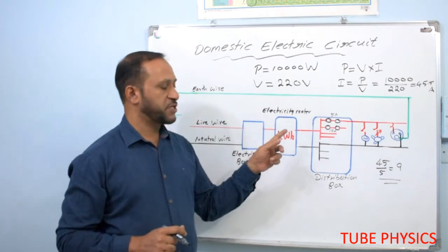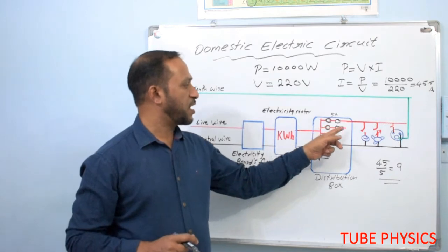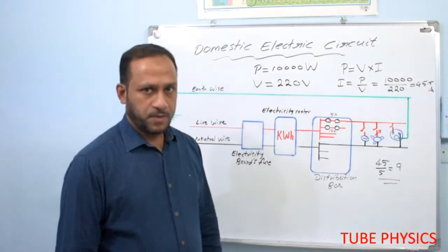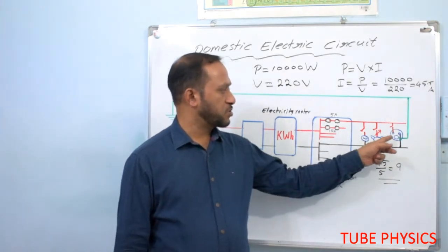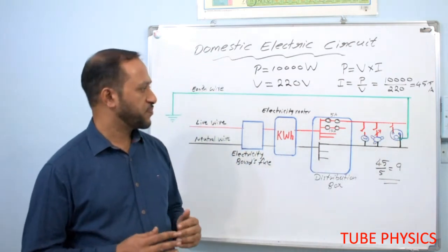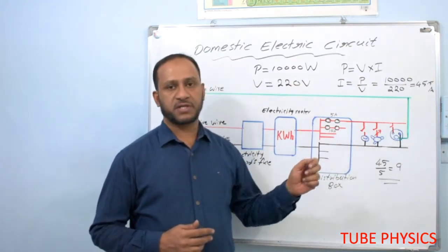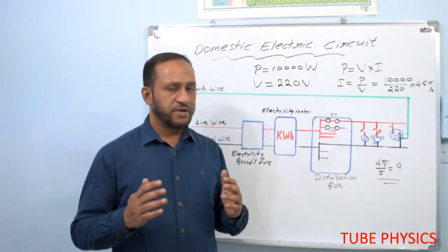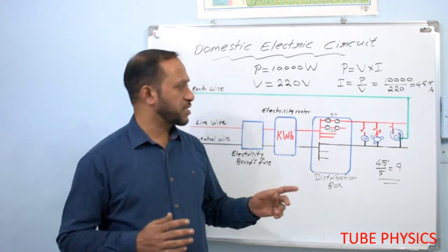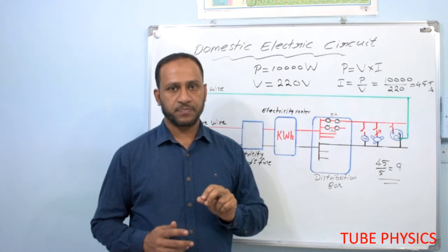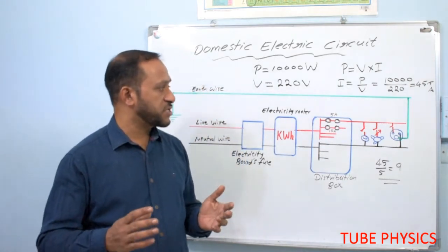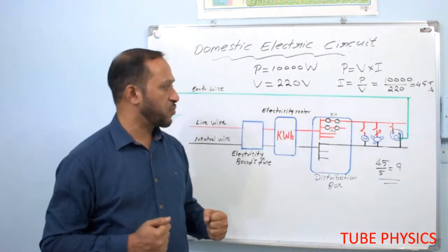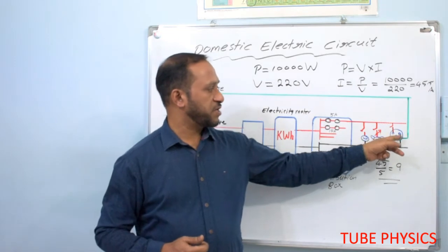An important point: all the fuses and switches must be connected in the live wire. We should not connect fuses and switches in the neutral wire. Earth wire is one of the safety measures used in domestic electric wiring. All electrical devices with a metallic covering should be connected to the earth wire using a 3-pin plug, because if there is any current leakage to the metallic covering and we touch it, we may get an electric shock — which can be avoided by connecting the metallic covering to the earth wire.